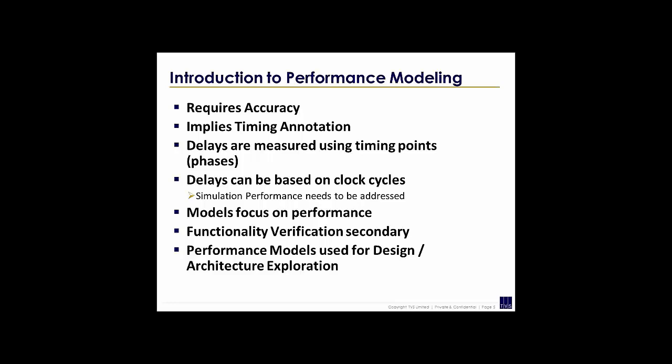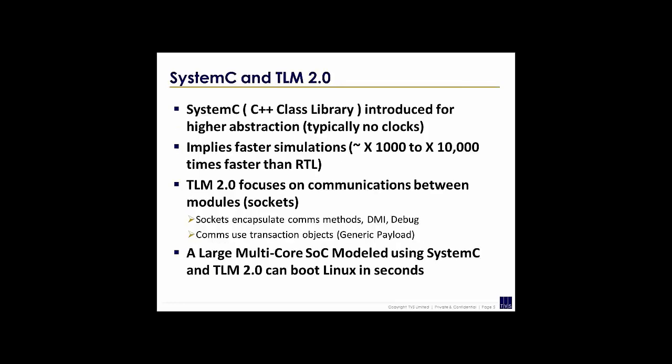Performance models typically focus more on performance rather than functionality. The level of functional verification required is decided in team meetings. For example, you may have an error correction code logic which doesn't require accurate functionality, but you definitely require accurate delays for the algorithm. These models are generally used by teams for design exploration or architecture exploration, so that they can improve the performance of their designs by studying various delay combinations.